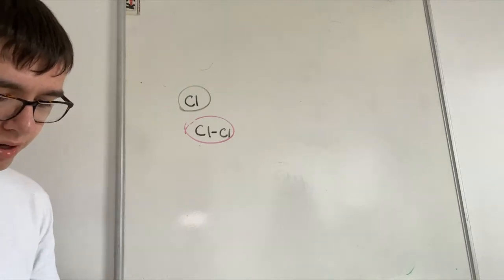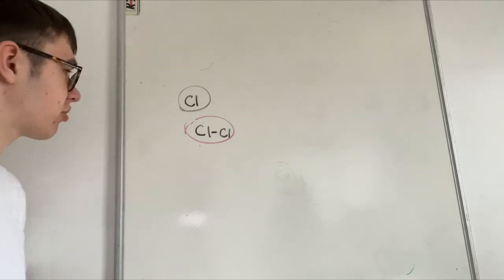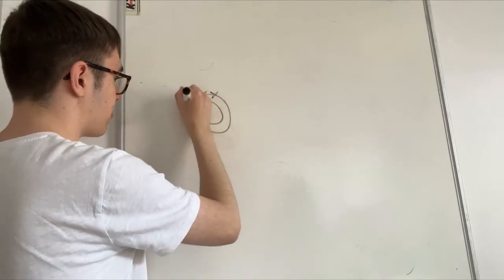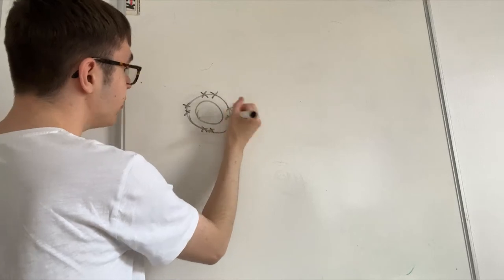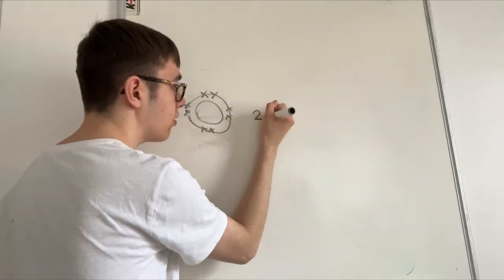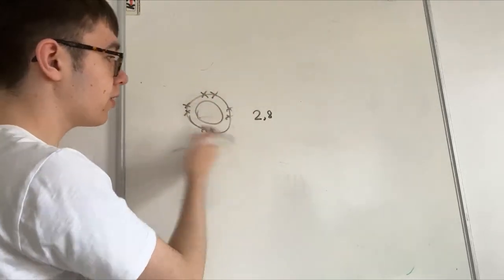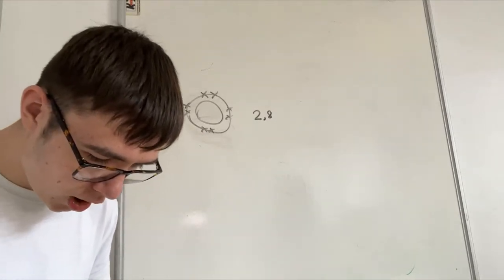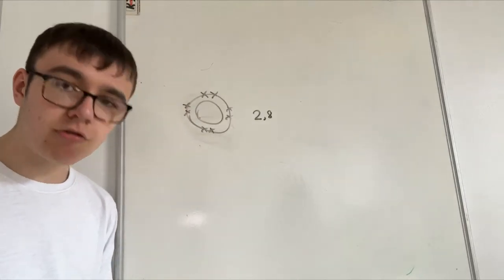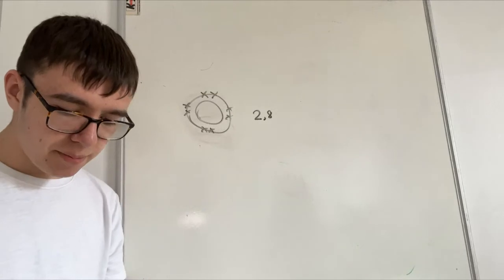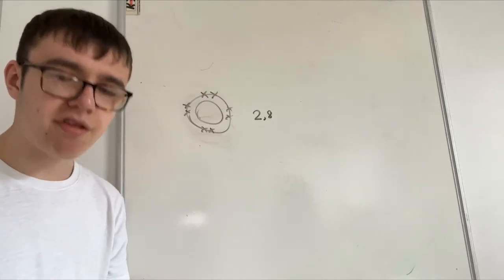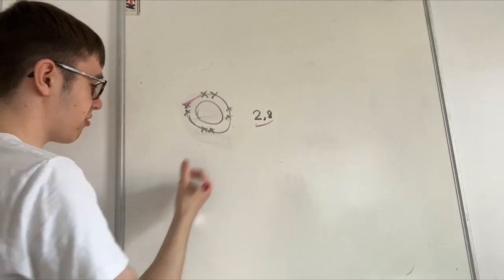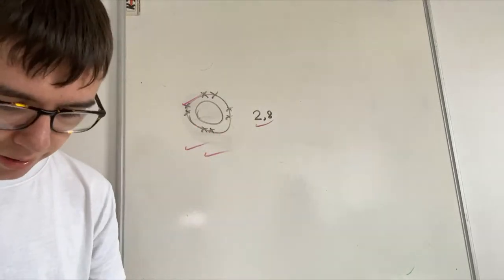Neon is unreactive because it has a complete outer shell — electron structure 2,8. This means none of its electrons need to react. The correct phrasing is: neon has the electron structure 2,8, meaning it has a full outer shell, it is already stable, and cannot react. That answer about its electron structure and stability could be worth four marks.